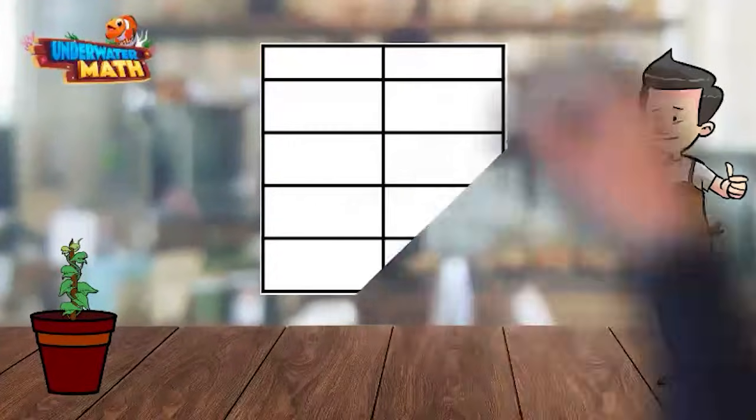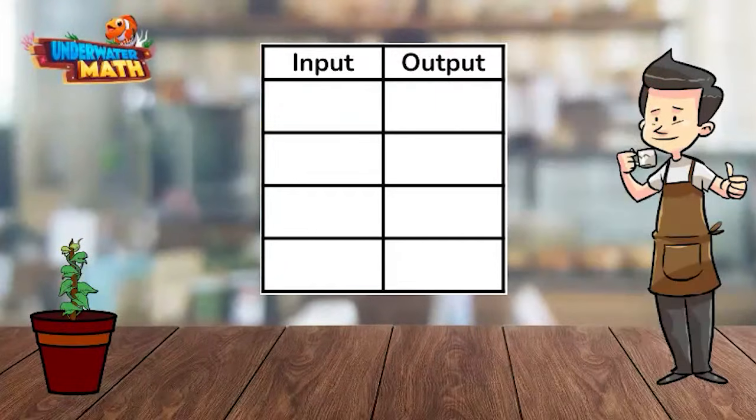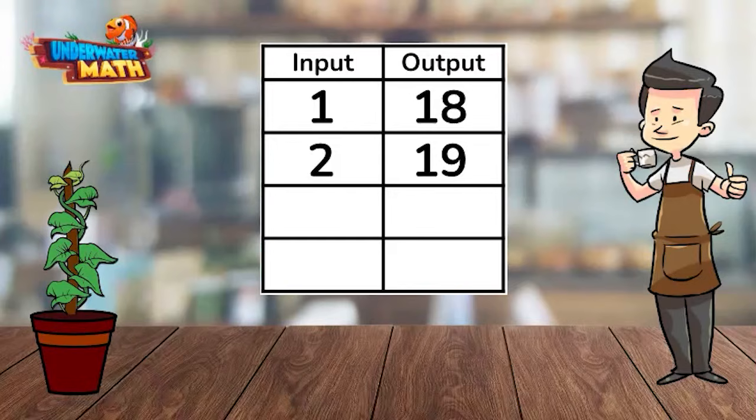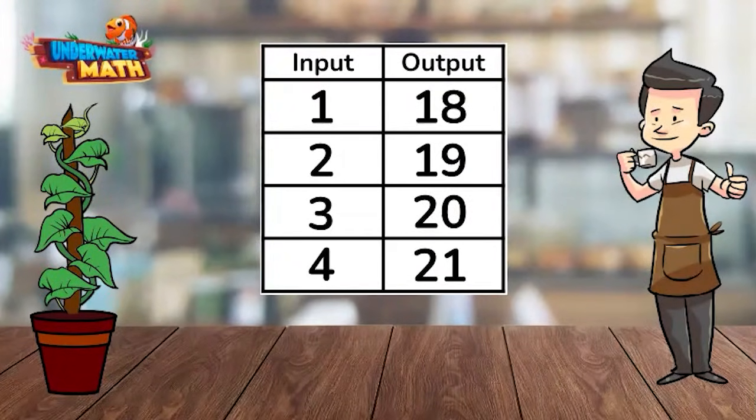We have been tracking its growth on this input-output table by putting the hours past as the input and the height of the plant as the output. After one hour, the plant was 18 inches tall. After two hours, it was 19 inches tall. In the third hour, it was 20 inches tall and 21 inches tall after the fourth hour.